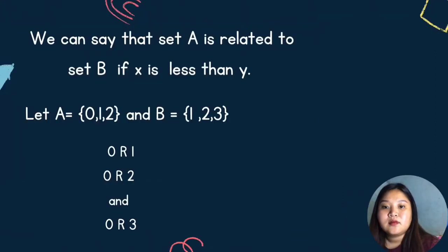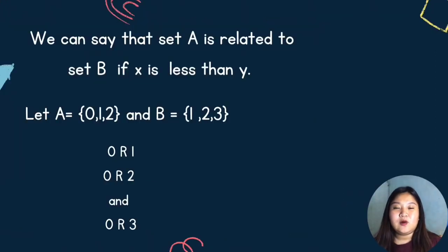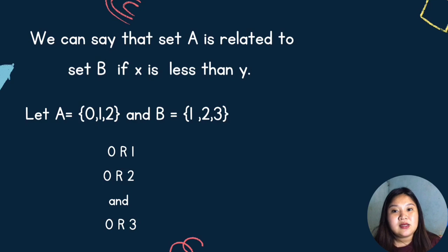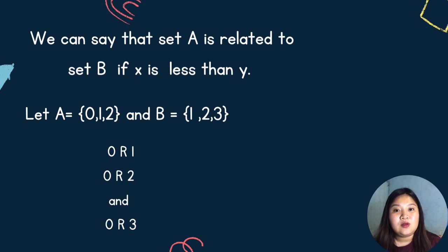Another example: let A = {0, 1} and B = {1, 2, 3}. Masasabi naman natin dito na yung x sa set A ay related sa y sa set B kung yung x ay less than y. Maaari natin sabihin na zero is related to one, zero is related to two, and zero is related to three — totoong related dahil lahat ng x sa nabanggit kong example ay less than the y.